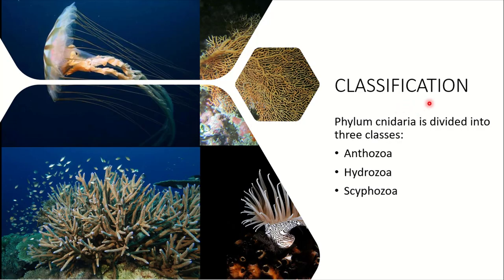Now the classification. Phylum Cnidaria is divided into three classes: Class Anthozoa, Class Hydrozoa, and Class Scyphozoa. Today's topic is about Class Anthozoa.